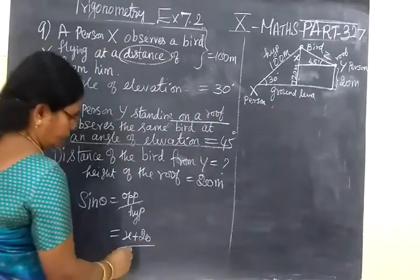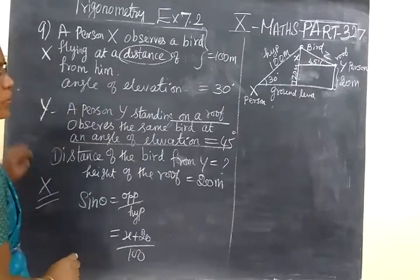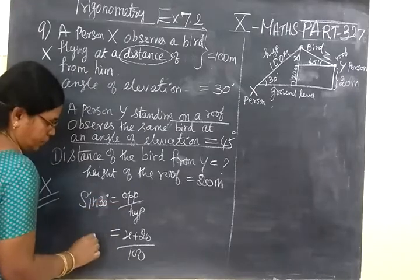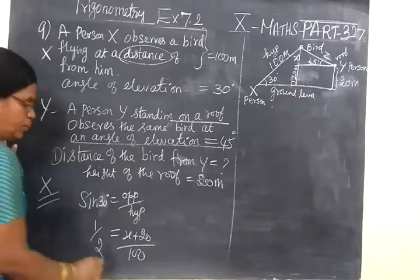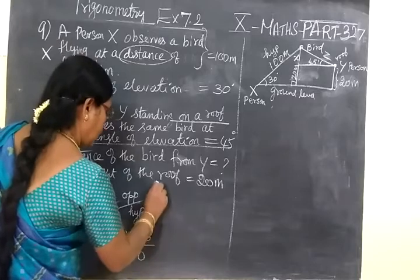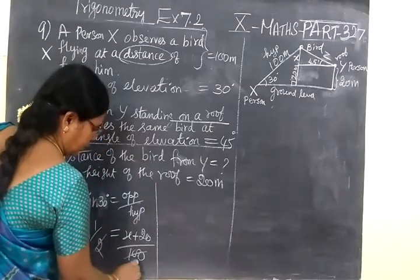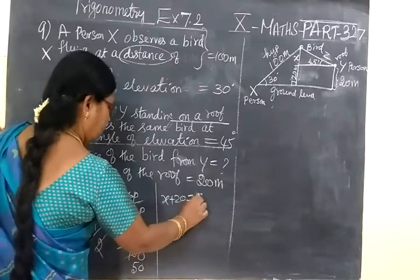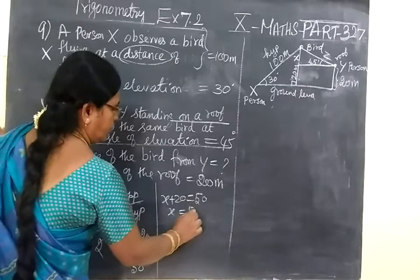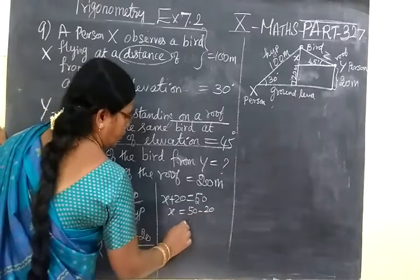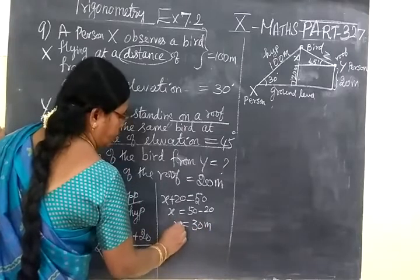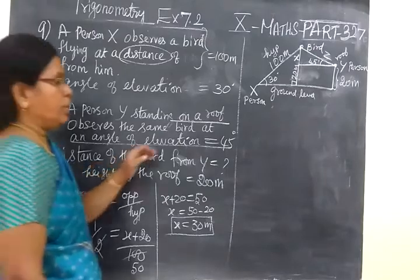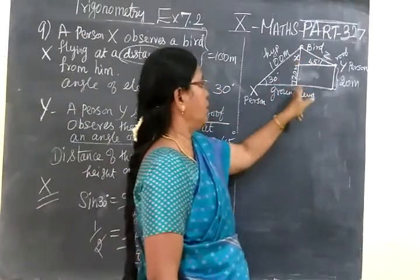So S plus 20 equals 50. Therefore S equals 50 minus 20, which equals 30 meters. We have found S equals 30 meters. So the total height is 50 meters — that is 20 plus 30 equals 50.